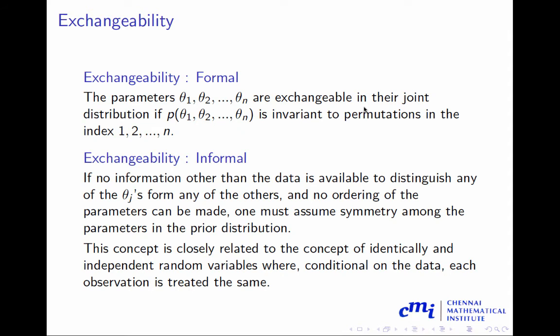Next, we are going to talk about a concept called exchangeability. The parameters theta_1, theta_2 to theta_n are exchangeable in their joint distribution if p(theta_1, theta_2, ..., theta_n) is invariant to permutation in index 1 to n. So effectively, if you take theta_1 and theta_2 and just exchange their position, the distribution will be invariant to the position of the parameters. That is what it means.